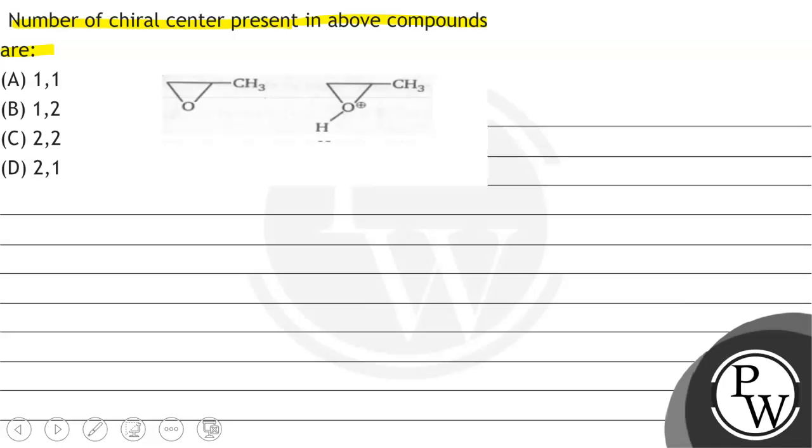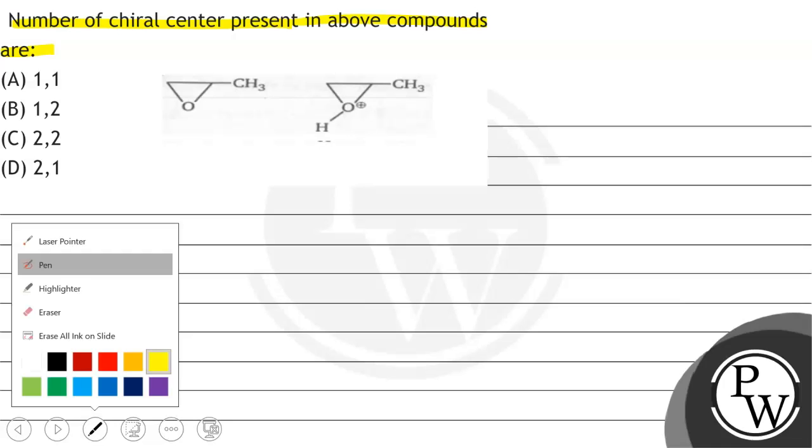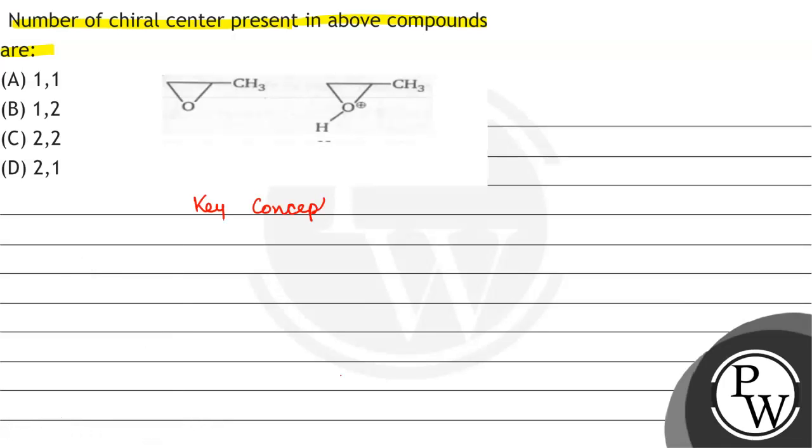First of all, we will see what will be the key concept used in the question. The key concept used in the question will be chiral centers have four different groups attached to them, all different groups attached to them.